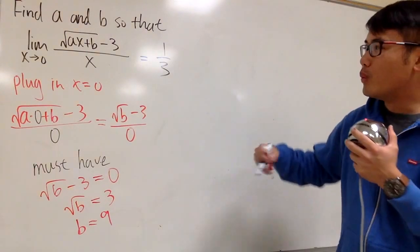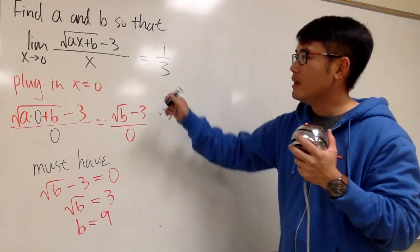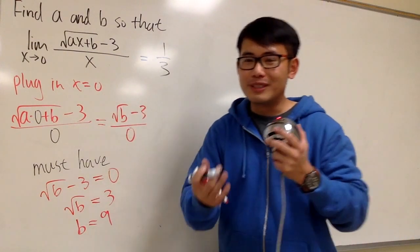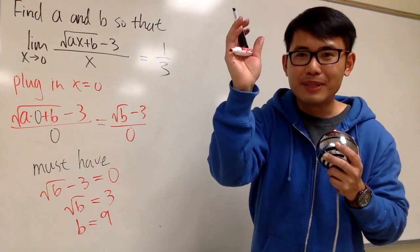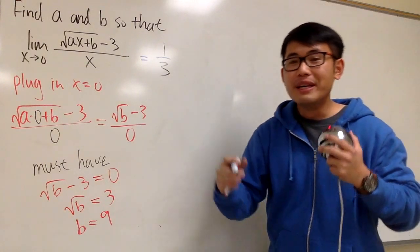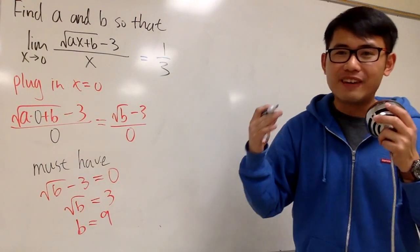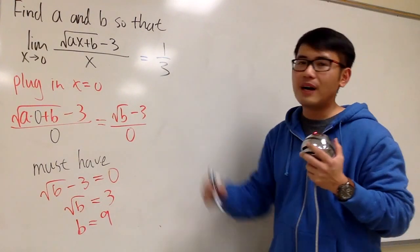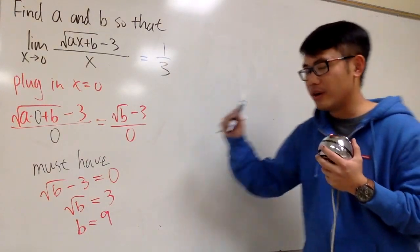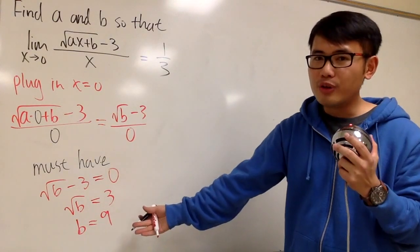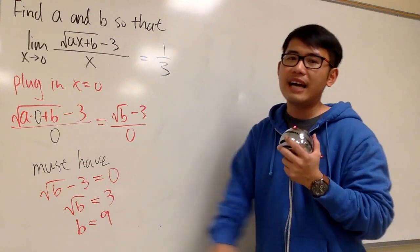Once again, when we're doing a limit, when you have a 0 on the bottom, you know it's pretty bad already. Let's have a 0 on the top as well, 0 over 0. When we're doing limits, in fact, we have a much better chance to get a finite value at the end. So that's how we can set an argument, b has to be 9.